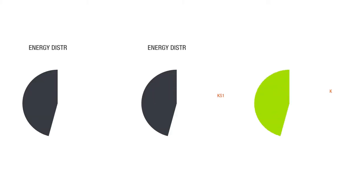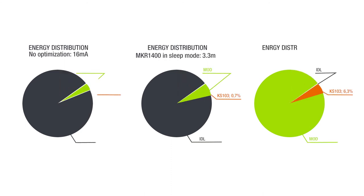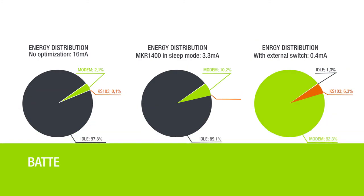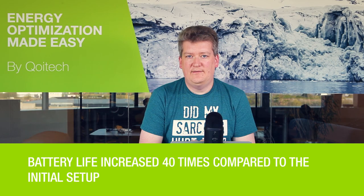Now that we've lowered the idle current consumption to around 5 microamps, the average current consumption becomes 0.4 milliamps if doing one measurement per hour. This means we have increased the battery life of the sea level indicator roughly 40 times compared to the initial setup. Thanks for watching — subscribe to our channel for more information, see the link below.